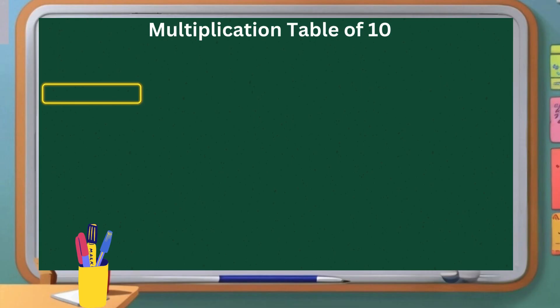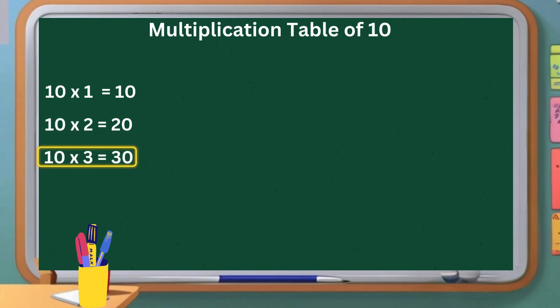Let's learn table of 10. 10-1s are 10. 10-2s are 20. 10-3s are 30. 10-4s are 40. 10-5s are 50.